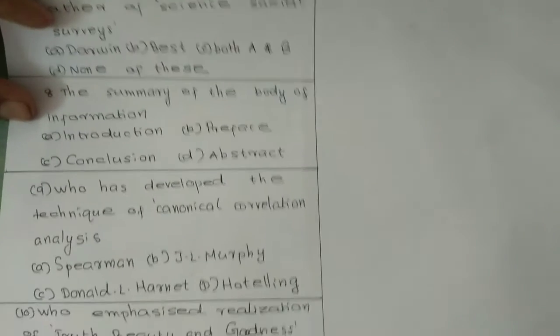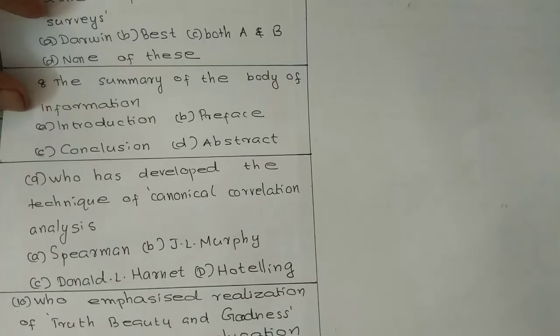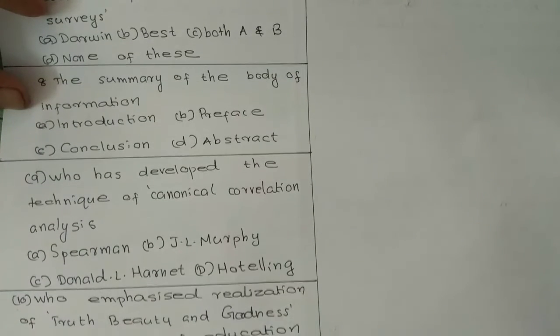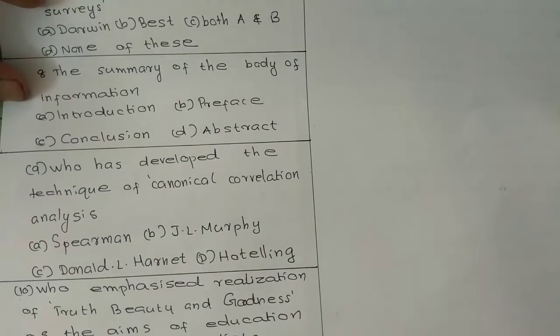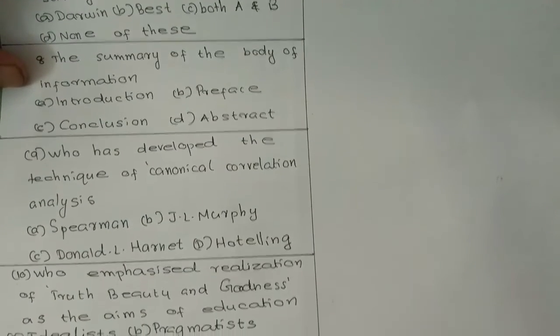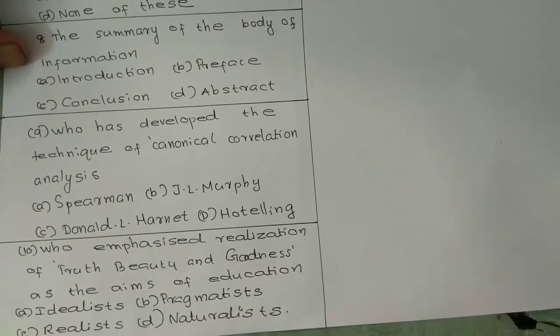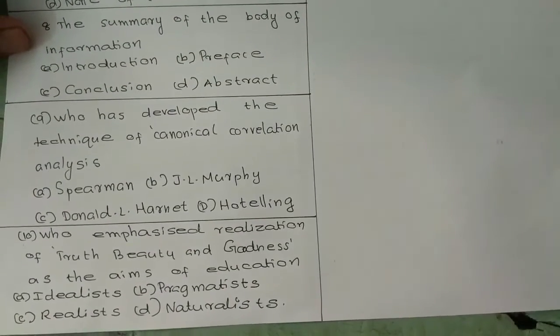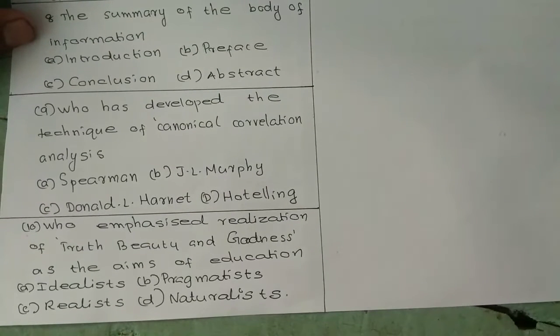Question 9: Who has developed the techniques of canonical correlation analysis? Option A: Spearman. Option B: J.L. Murphy. Option C: Donald L. Harnet. Option D: Hurtling.